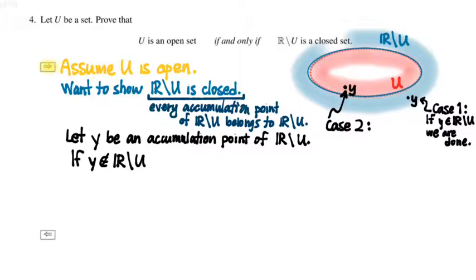And so what we'd like to say is that then Y must, if R minus U is a closed set, then Y needs to belong to R minus U. So if Y doesn't belong to R minus U, we're going to arrive at some kind of a contradiction. But how we can do that is by observing that since Y doesn't belong to R minus U, that means that Y belongs to U. And we happen to know something about the set U, namely that it's an open set.